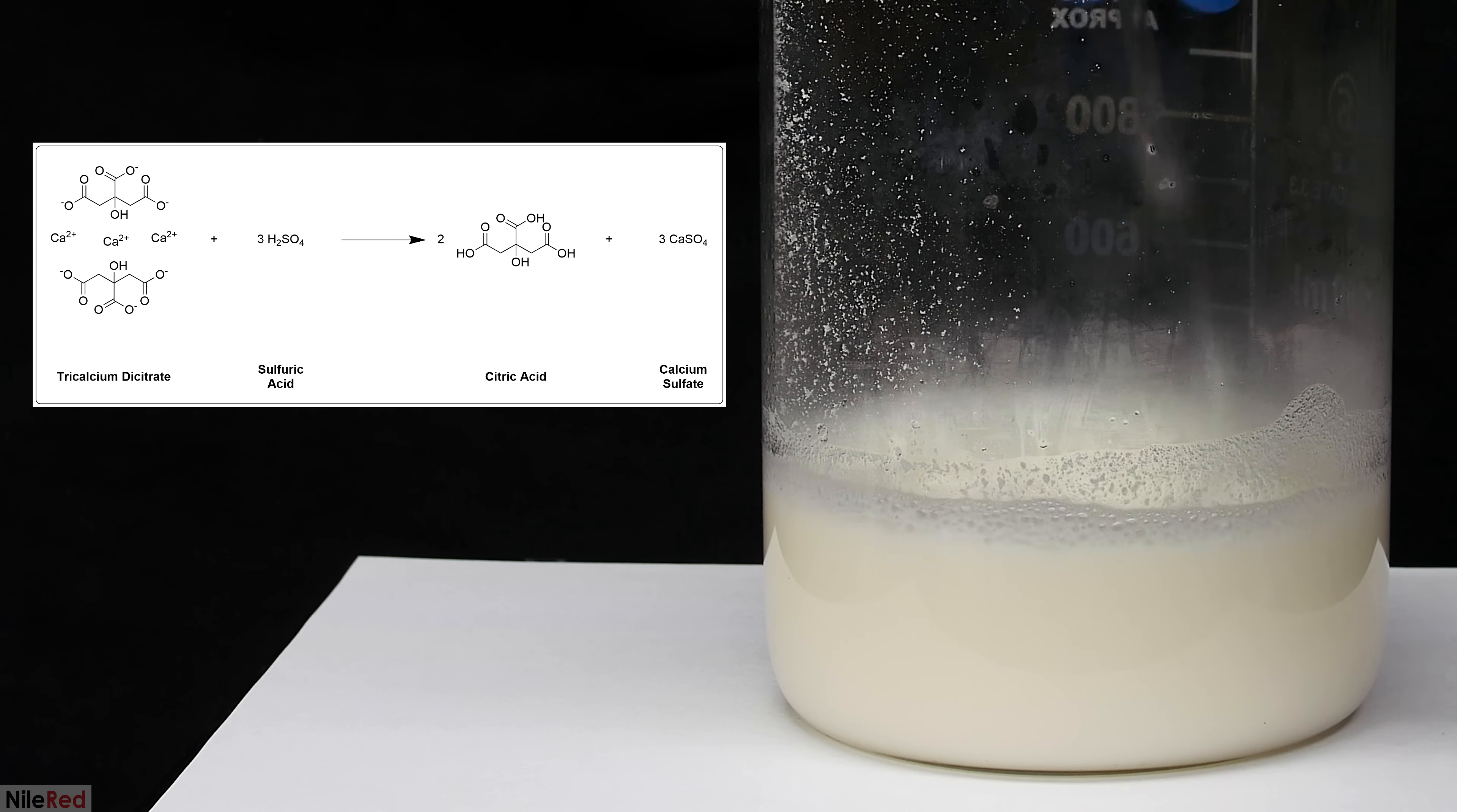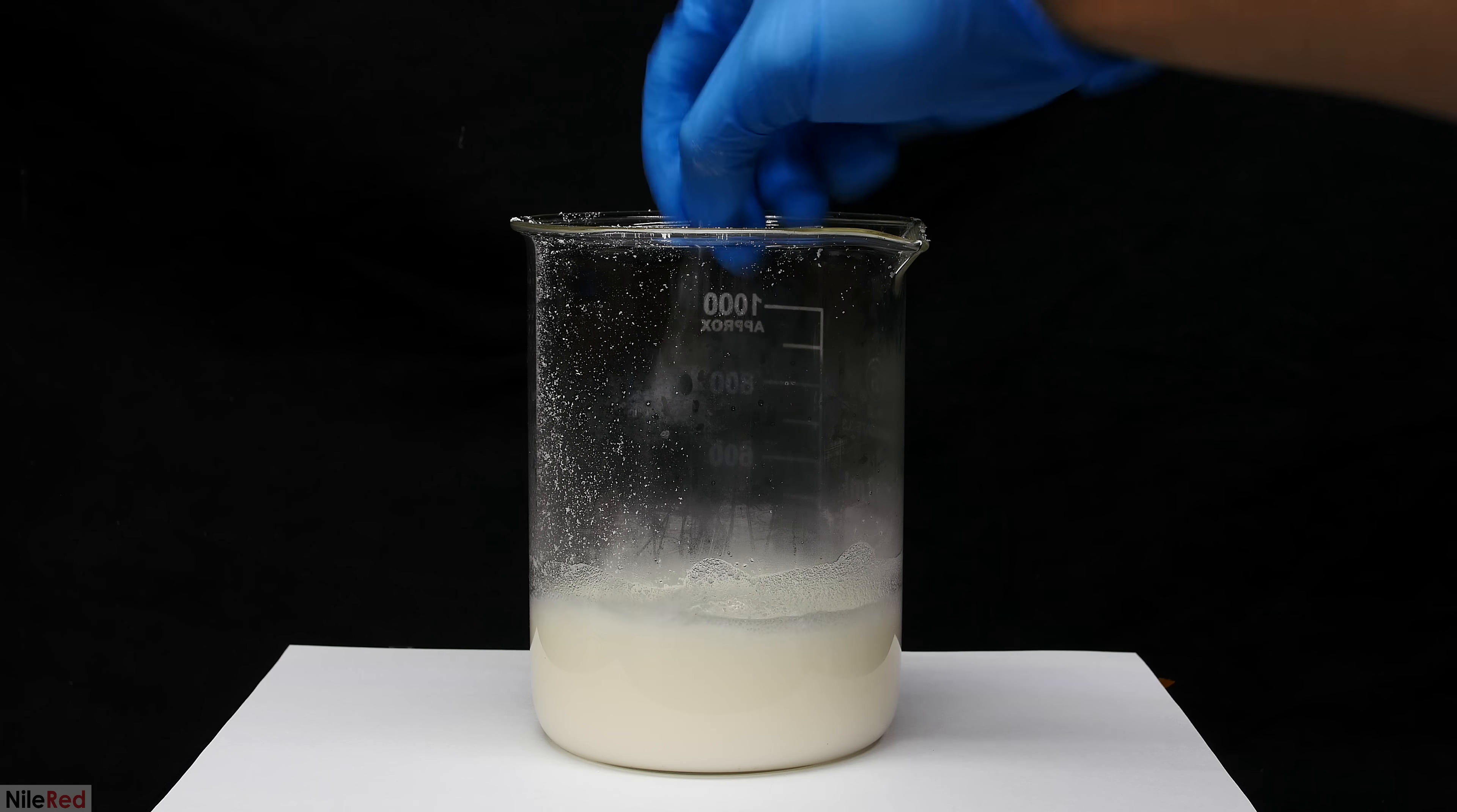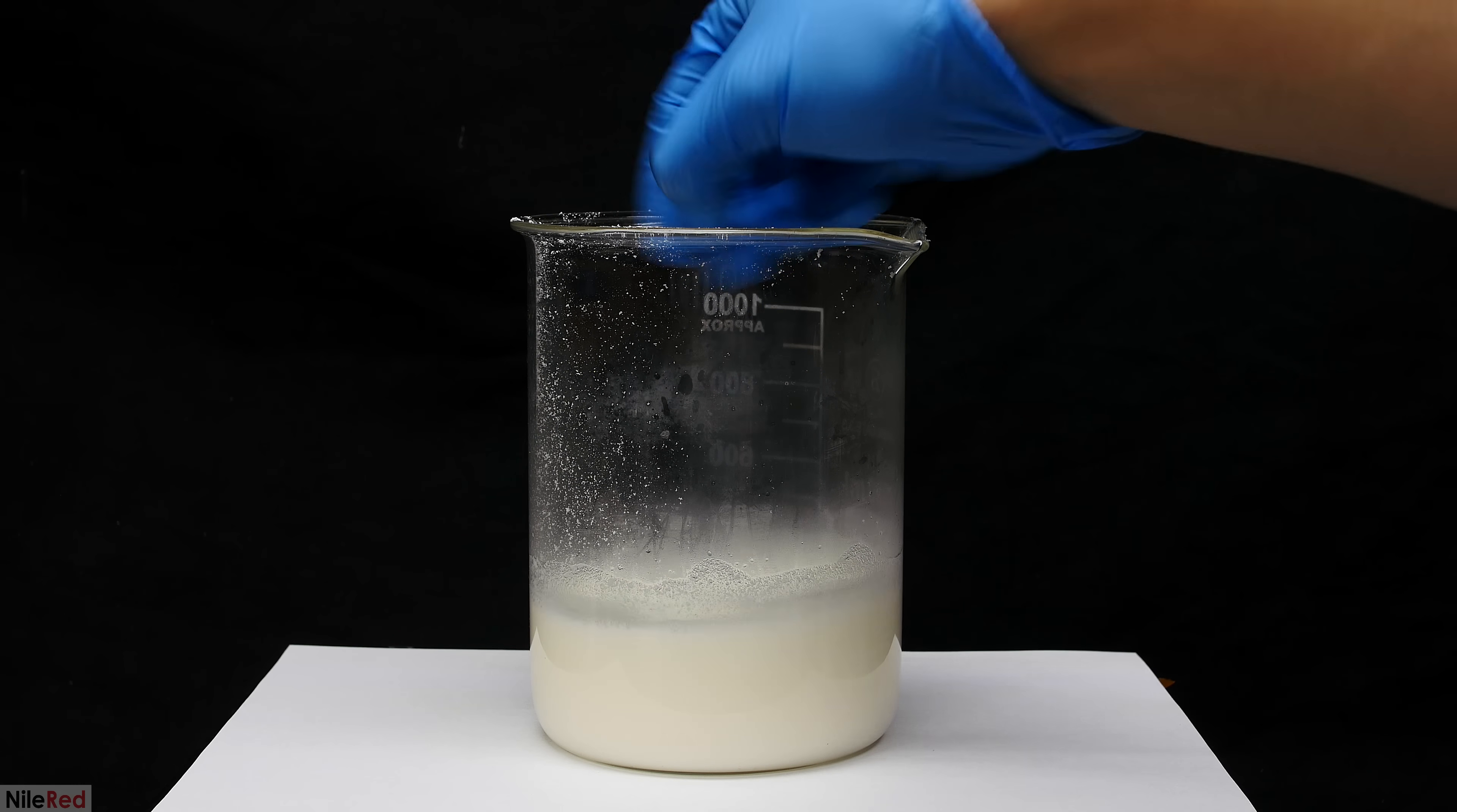Citric acid readily dissolves into the water but the calcium sulfate that we produce is really insoluble. It's important that the side product salt is insoluble because this lets us separate it from the citric acid. Because we're starting with calcium citrate which isn't very water soluble and ending with calcium sulfate which is also not very water soluble it doesn't look like too much is happening.